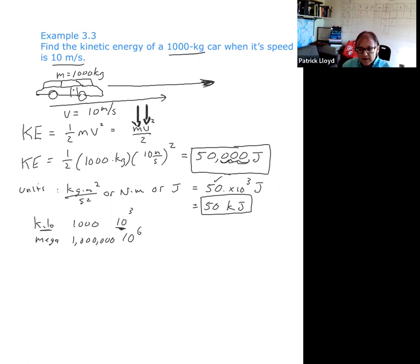We could also do mega, but for mega, you would need to move it six places. So if I move it over one, two, three, four, five, now I got to add a zero, so I have 0.050. Now you could put megajoules because I moved it six places. Six places is mega, three places is kilo.